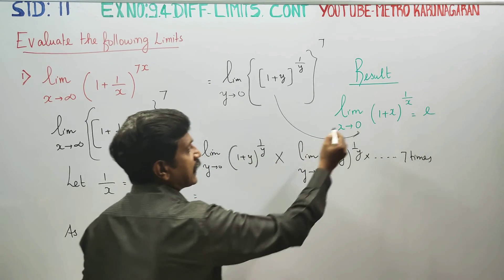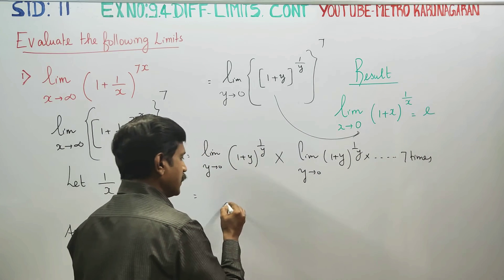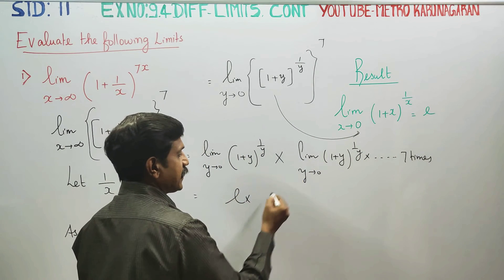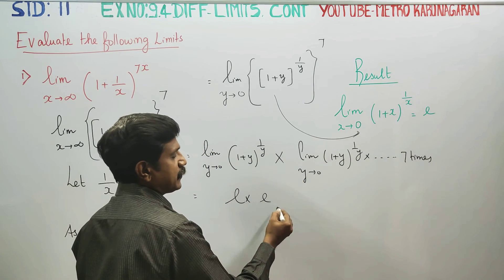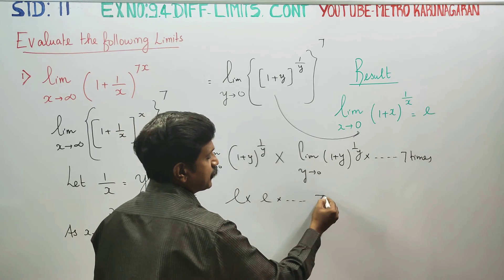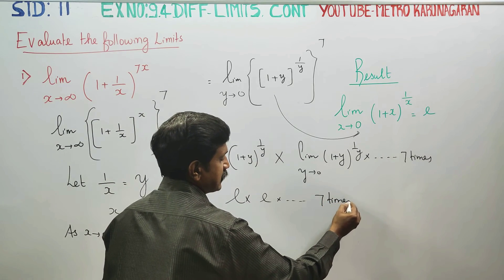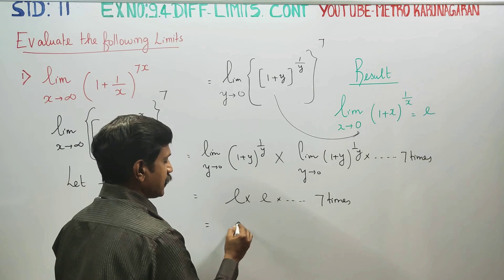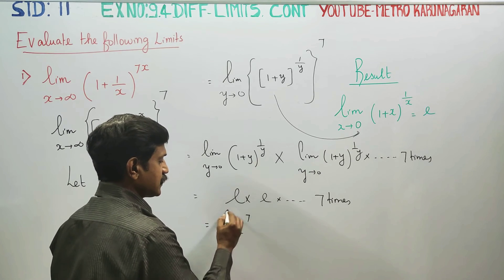One time you get e, second time e, and it goes on up to 7 times. Then e into e into e equals e power 7. This is your answer.